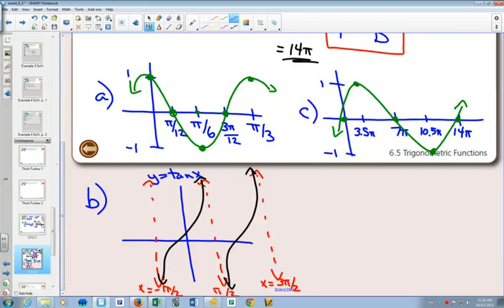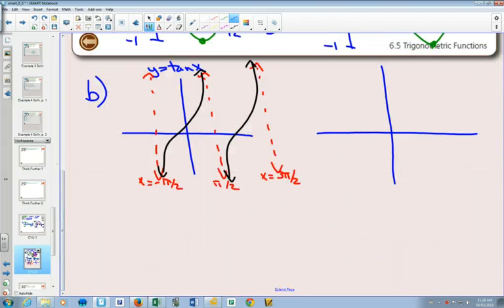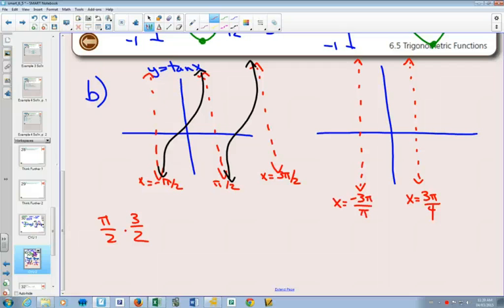All that we're going to change when graphing the tan is we're going to look at our asymptotes. What's going to happen to our first asymptote, which was π over 2? If I start with π over 2 and I multiply it by 3 over 2, I'm going to get 3π over 4. And so my first asymptote that I'm going to draw here, I'm going to label at 3π over 4. This asymptote on this side will be at negative 3π over 4. If we took our second asymptote, which was 3π over 2, and multiplied it by 3 over 2, we would get 9π over 4.